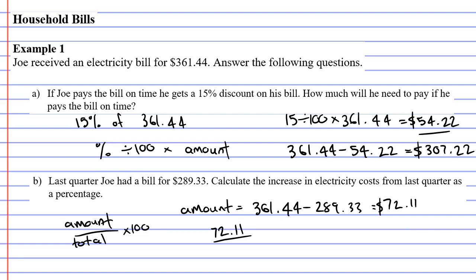If you read the question it says calculate the increase from last quarter. So last quarter is the cheaper price. So that's the total that goes at the bottom, and we're going to times by 100.